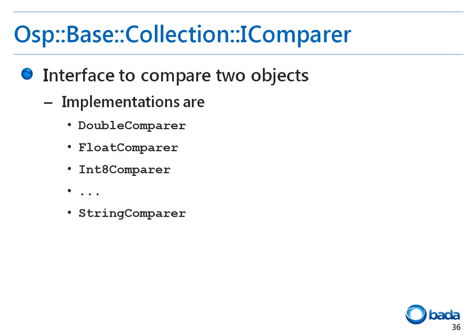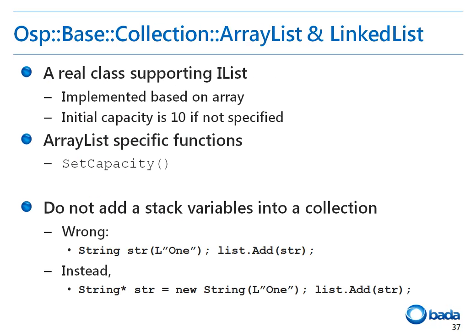iCompare interfaces are implemented for known types such as double, float, or string. The actual implementation of the iList interface is the ArrayList class and the LinkedList class. Note that items in the list cannot be stack variables, because the memory allocated to a variable may disappear when the variable goes out of scope. Let's see how to use an ArrayList using an example.